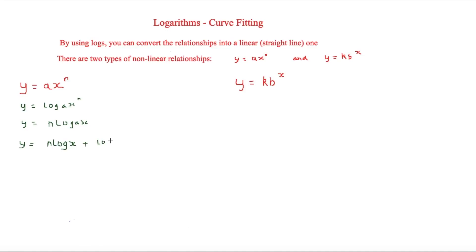This is significant because it matches the form y = mx + c. So we can work out what a and n are by looking at the gradient and intercept of the straight line. The next case is very similar — we apply logs to the second type of relationship.